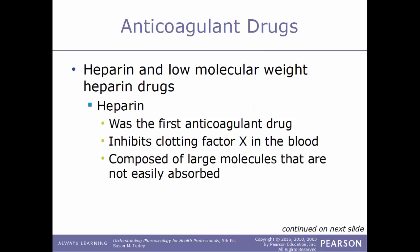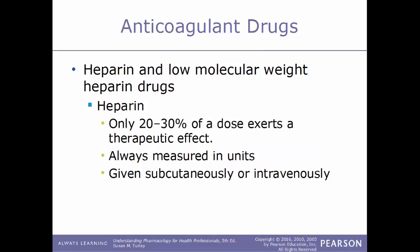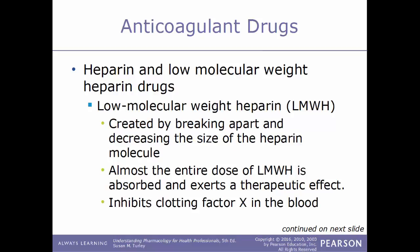The first type of anticoagulant drug is heparin and low molecular weight heparin. Heparin was the very first anticoagulant drug developed. It works by inhibiting clotting factor number 10 in the blood. It is composed of large molecules that are not easily absorbed, and only 20 to 30 percent of a dose actually exerts a therapeutic effect. Heparin is always measured in units and is given either subcutaneously or intravenously.